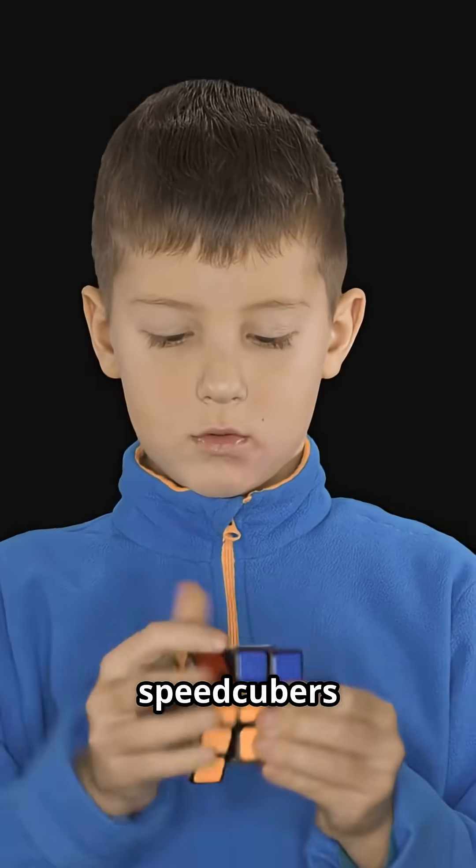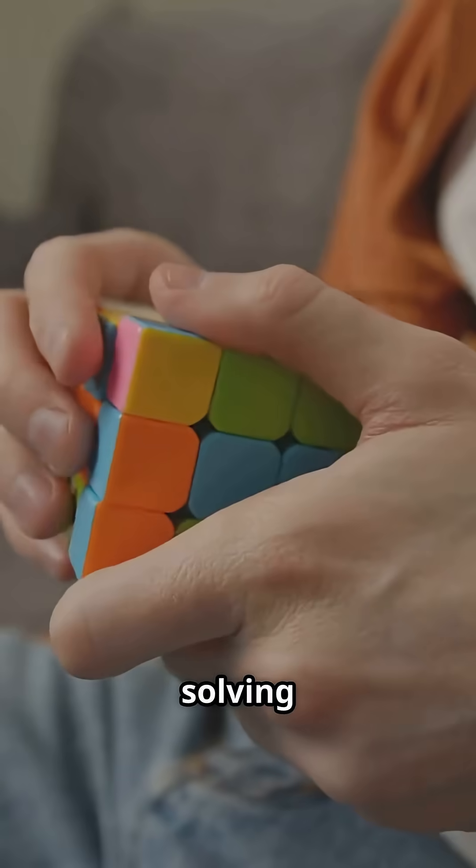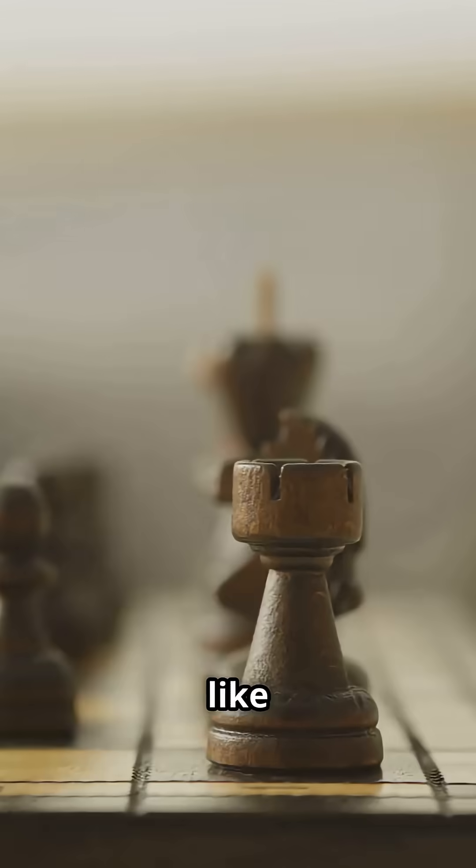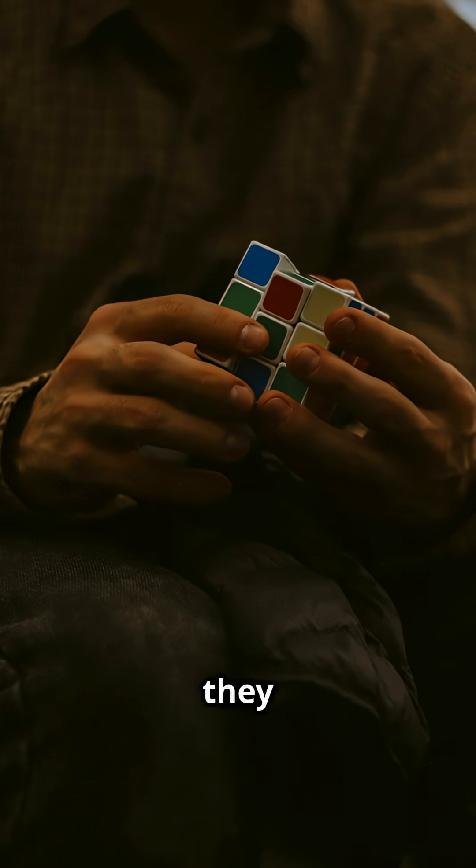Now let's talk speedcubers, the real-world wizards. They use the CFOP method, solving layers with 57 memorized algorithms. They look ahead like chess players, predicting moves before they even turn.